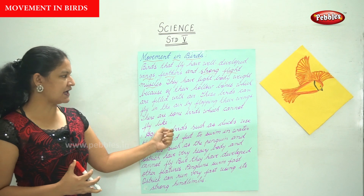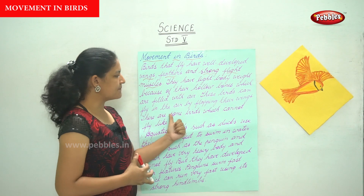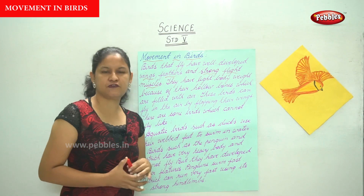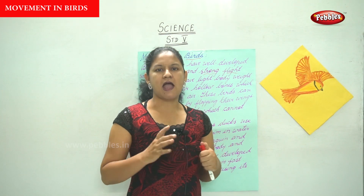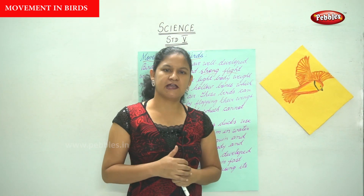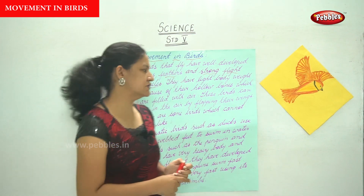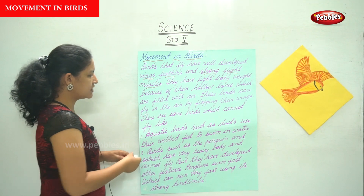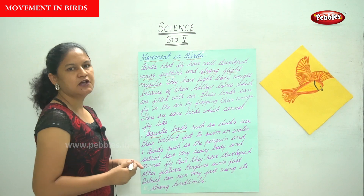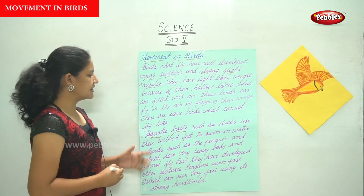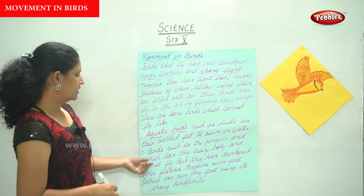There are some birds which cannot fly. So in birds itself there are two types: birds which can fly and birds which cannot fly. Talking about birds which cannot fly, we have aquatic birds such as ducks.